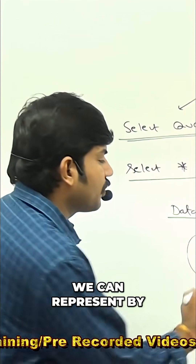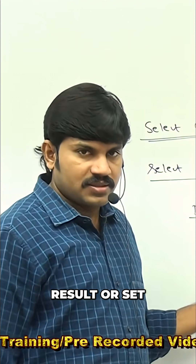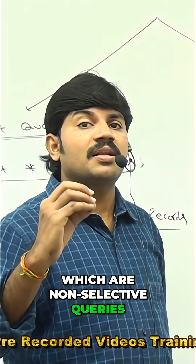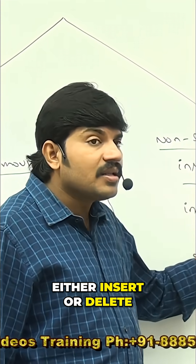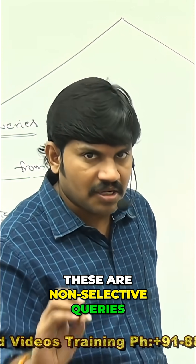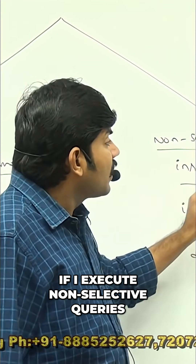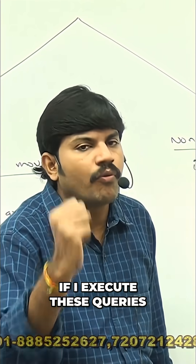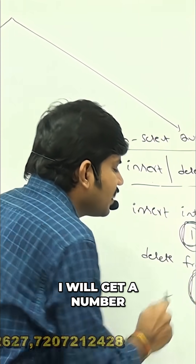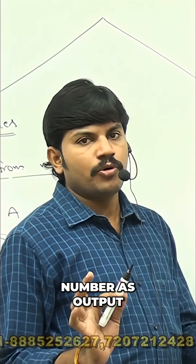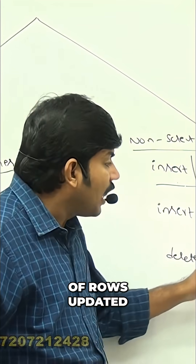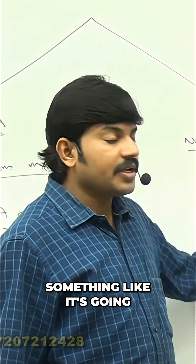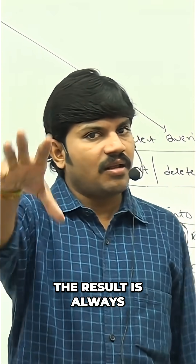This group of records can be represented using a result set. Instead of a SELECT query, if I execute a non-SELECT query — which are INSERT, DELETE, or UPDATE — these are non-SELECT queries, data manipulation commands. If I execute these queries, I will get a number as output, which represents the number of rows updated, the number of rows deleted, or the number of rows created.